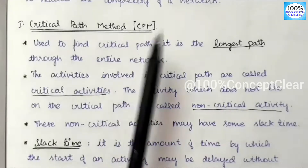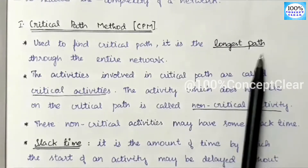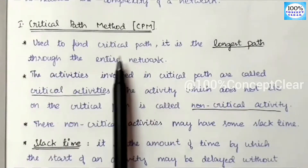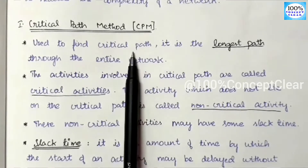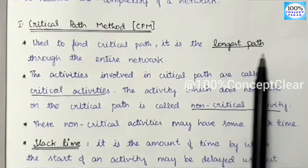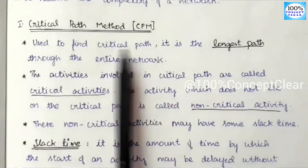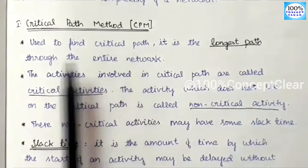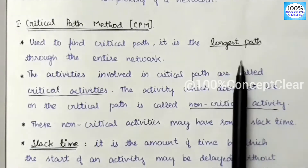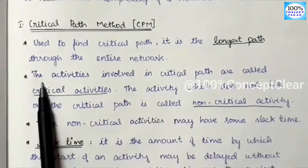What is the Critical Path Method? It is used to find the Critical Path, which is the longest path through the entire network. The Critical Path in a network diagram is the longest path and has the longest duration.